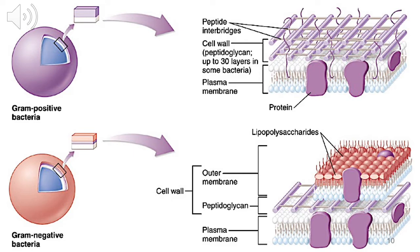Let's do a brief review of gram-positive and gram-negative bacteria. Under the microscope, a gram-positive bacterium stains violet because it absorbs the crystal violet stain — primarily because of its thick peptidoglycan layer. Some gram-positive bacteria have up to 30 layers. Gram-negative bacteria stain pink because they do not absorb crystal violet but instead absorb the counterstain safranin. Gram-negative bacteria have a very thin peptidoglycan layer covered by an outer membrane called a lipopolysaccharide membrane — a very important concept to remember.